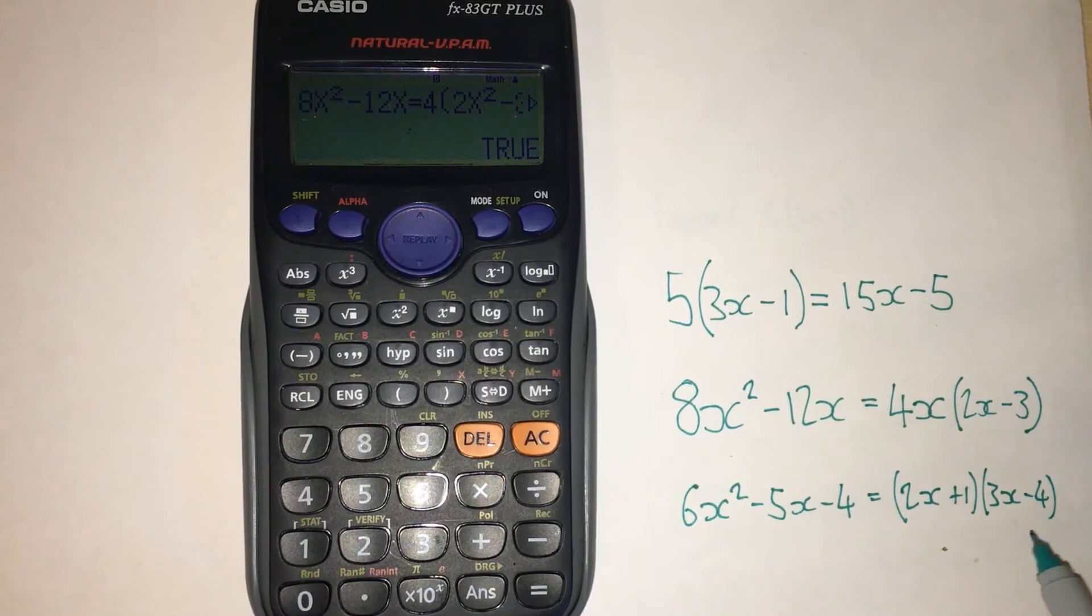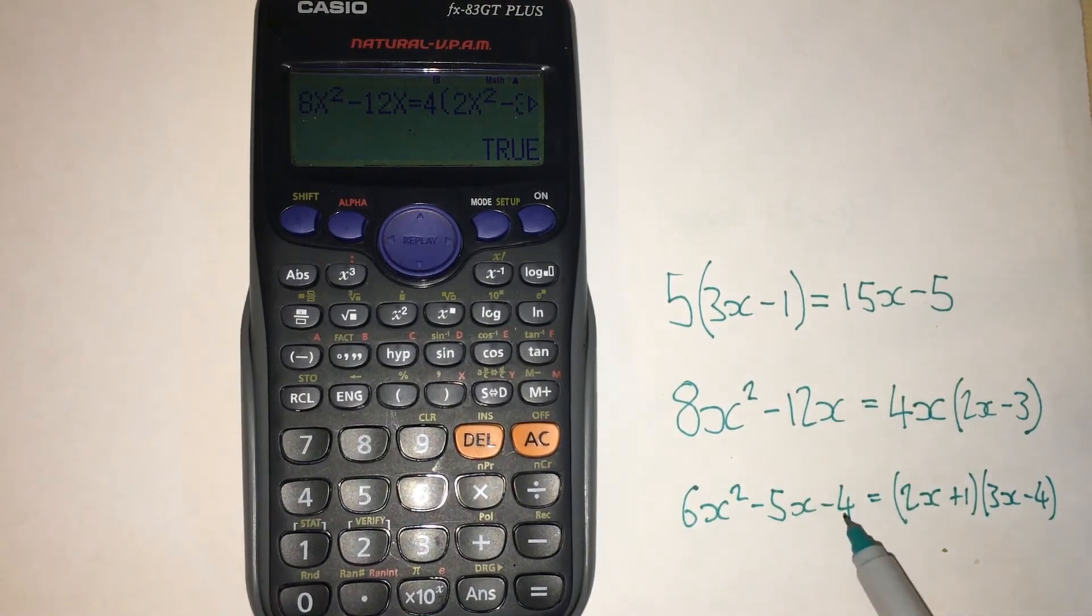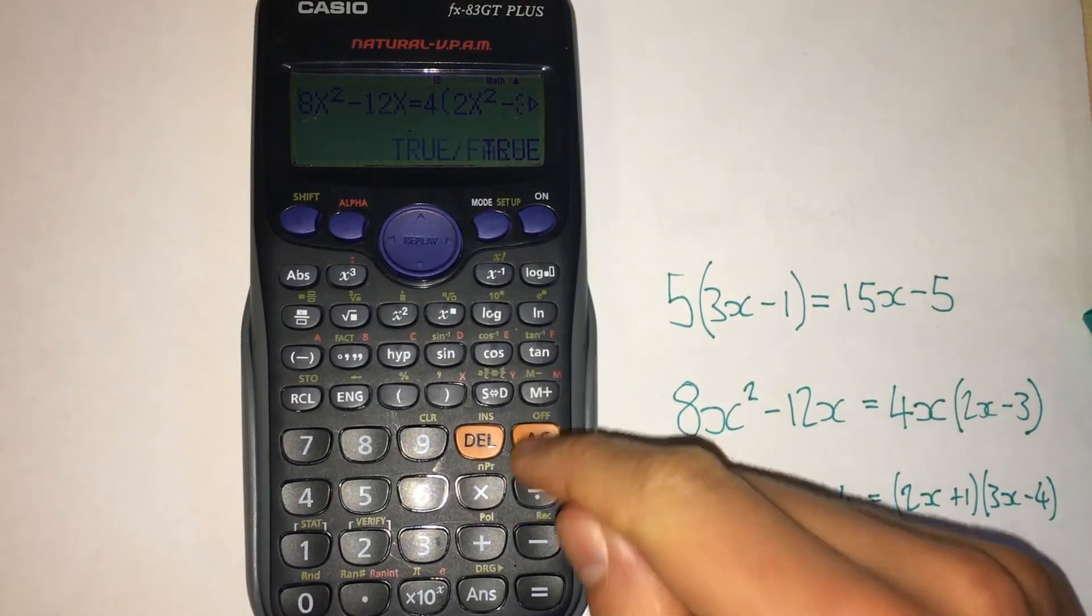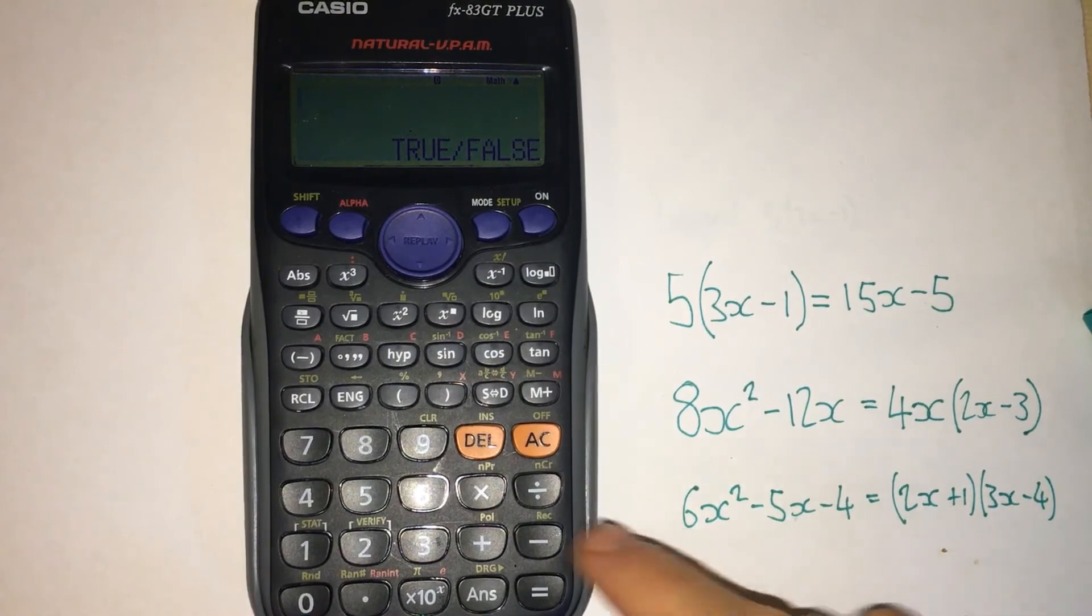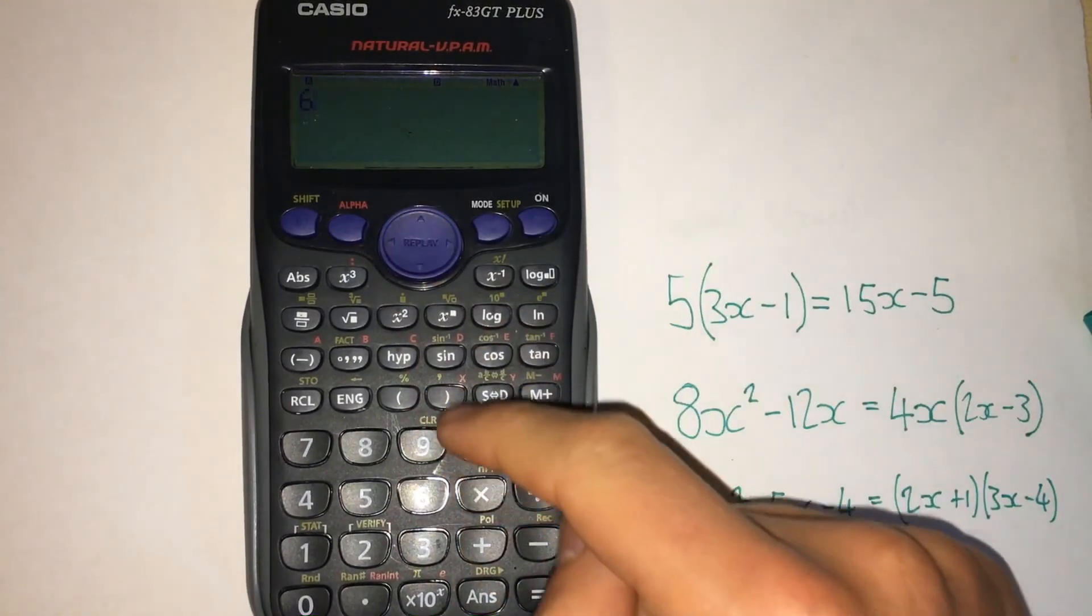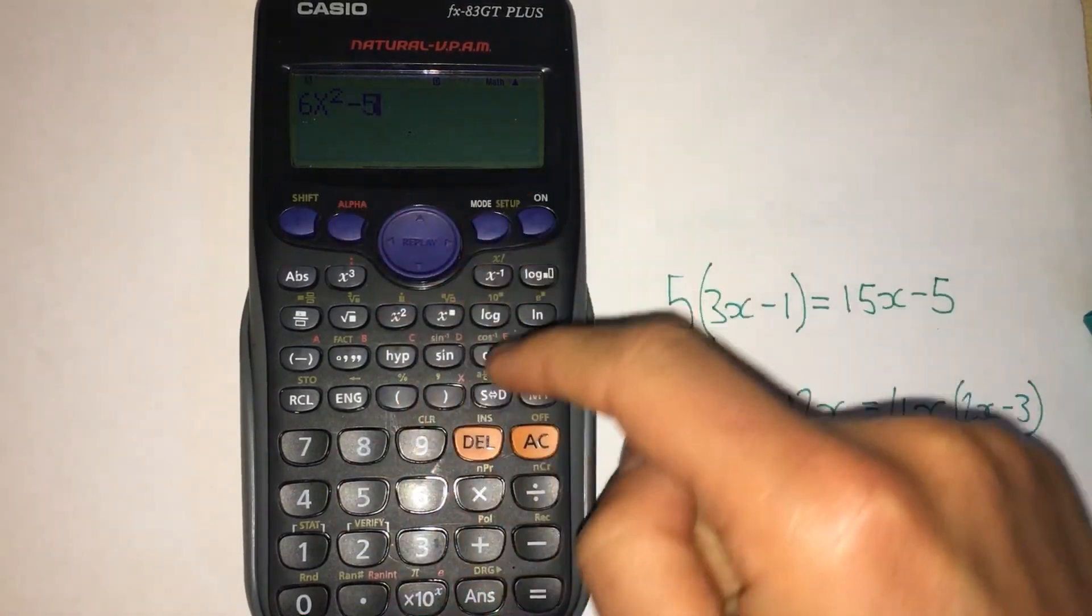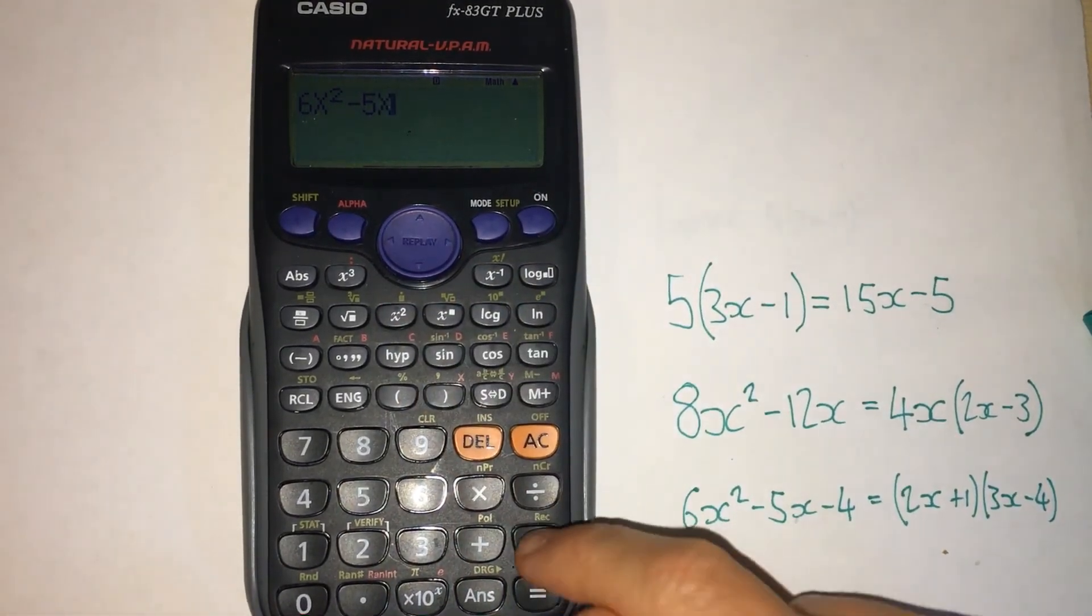Now I could type in the brackets here and check whether the expansion is correct, or I can type in the original one here and check whether my factorizing is correct. It doesn't matter which one you type in first. So I'm going to do six, use the alpha function again to get x squared, minus five, alpha function, get the x there, minus four.